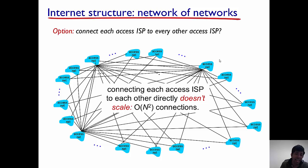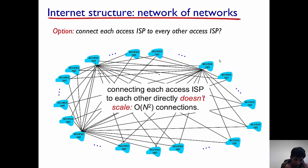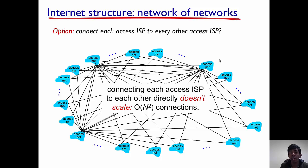In fact, if there are n ISPs, there are O(n²) connections. Each ISP is connected to n minus 1 other ISPs, and there are n ISPs in total, so there are n times (n minus 1) connections overall. This is pretty complex and hard to achieve.